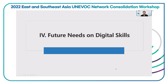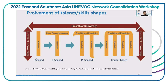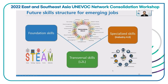Now let's see future needs on digital skills. In the past, I-shaped talents were quite popular. In the future, TVET institutions are supported to supply comb-shaped talents — comb-shaped technicians. They are supposed to have broad general knowledge and also multiple special skills. In the future, all people need to have three kinds of skills: the first is digital skills, also called steel skills; the second is transversal skills, also called software skills. It covers many digital skills such as AI and IoT.